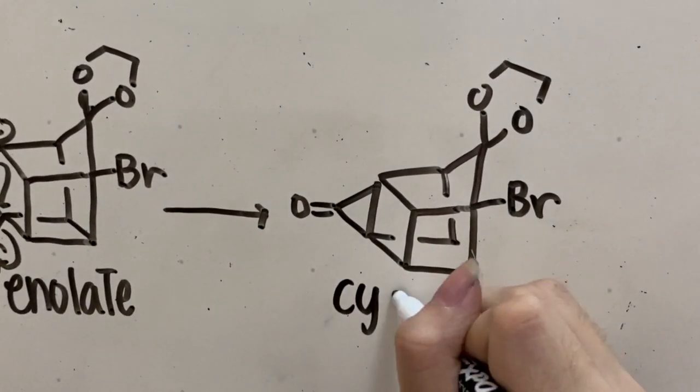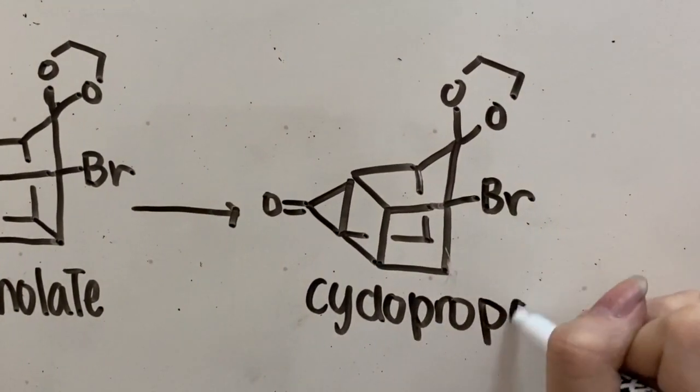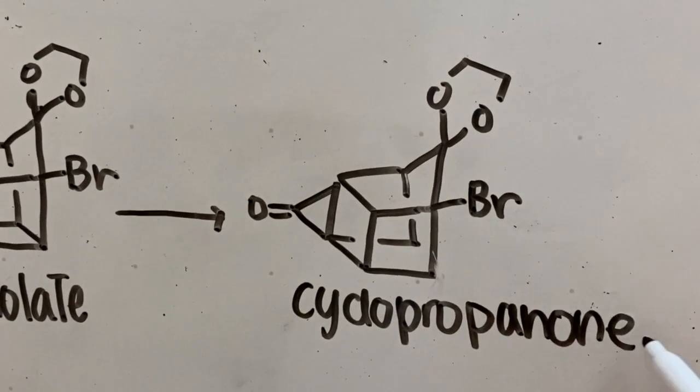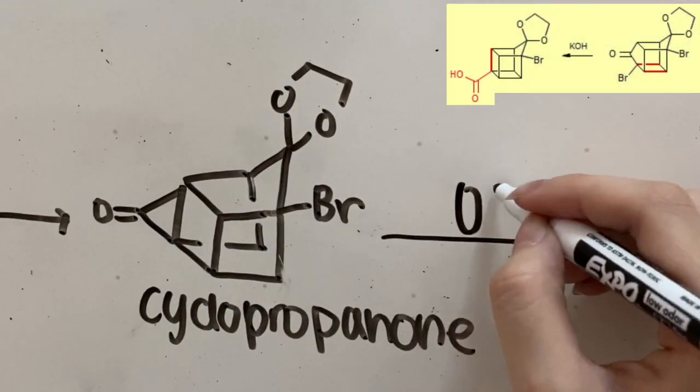We're left with a cyclopropanone intermediate, which is then attacked by the hydroxide nucleophile and we lose the ketone.